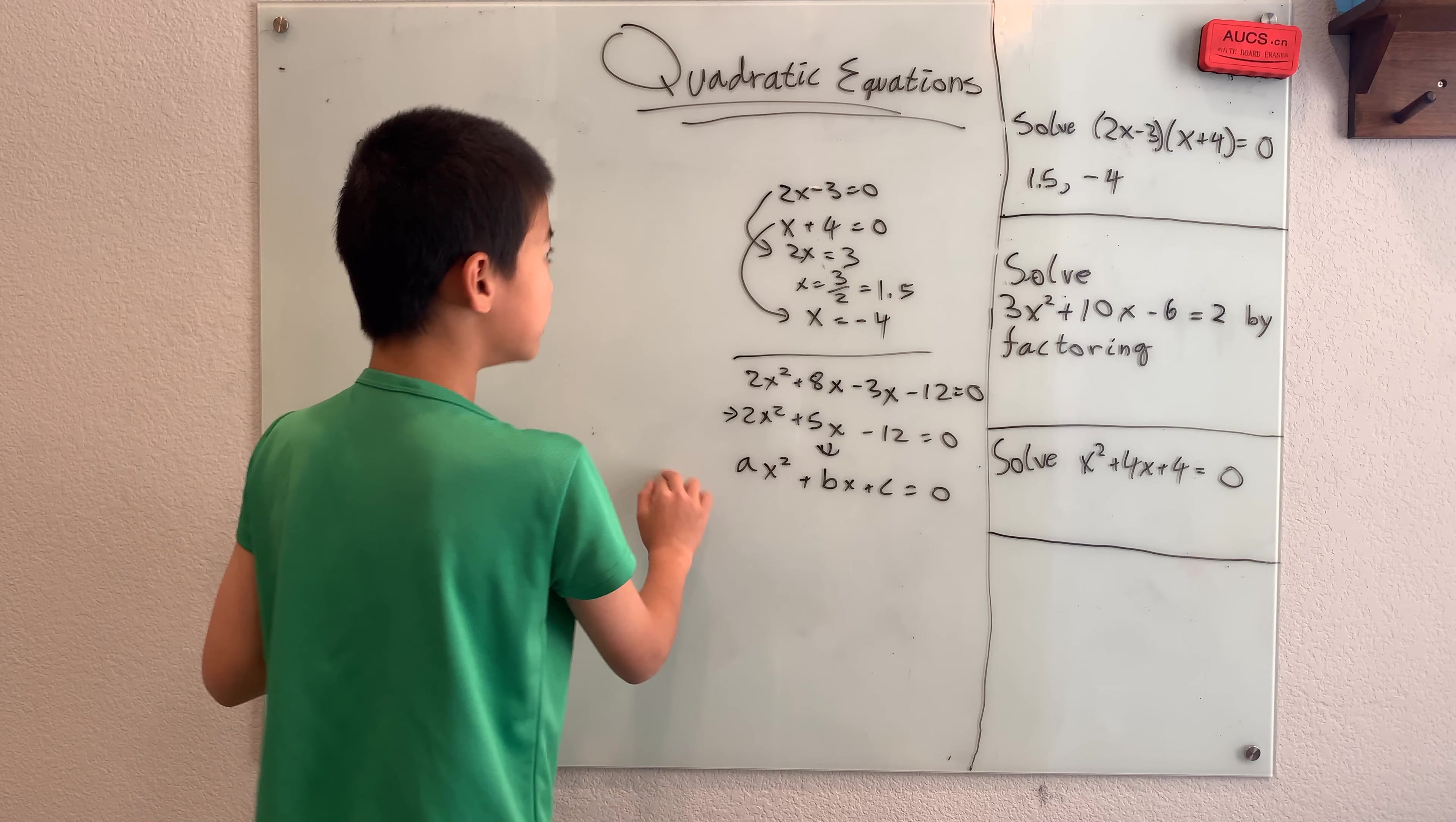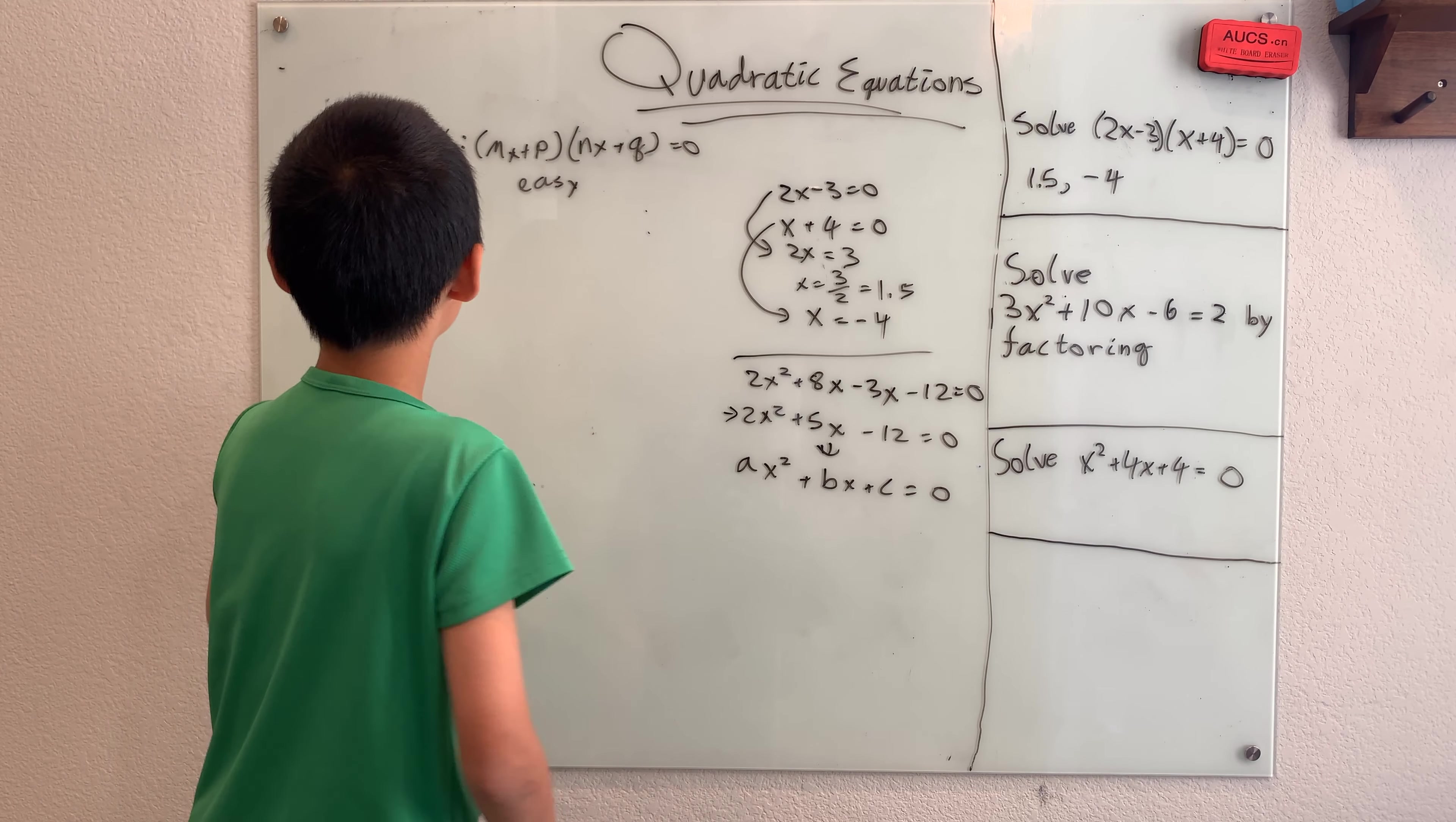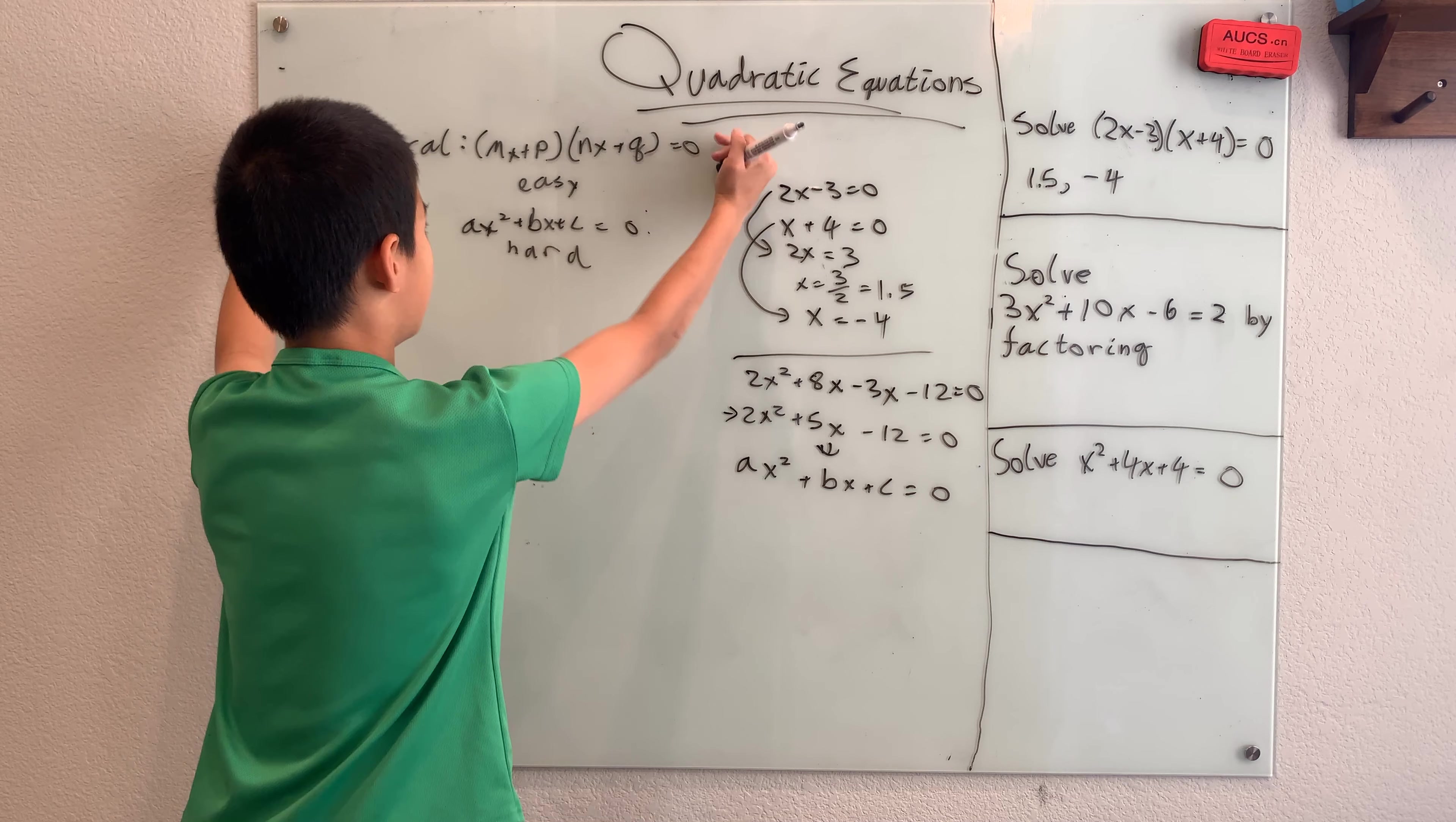So when you have this not so easy equation, here, if you can turn it into something that looks like mx plus p times nx plus q, well, this is an easy to solve equation, that is, if you have the 0. And what's not easy is if you factor this out and get mx times nx and so on and so forth, just like we did here,